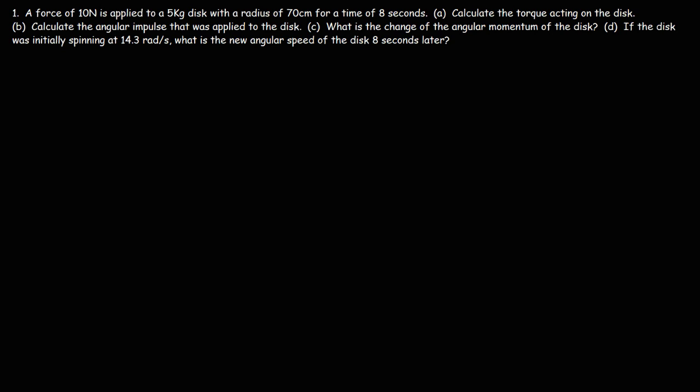In this video, we're going to work on a problem associated with angular impulse. We have a force of 10 newtons applied to a 5 kilogram disc with a radius of 70 centimeters for a time of 8 seconds. Let's begin by drawing a picture. I'm going to draw the top view of the disc, which looks like a circle. Here we have the radius of the circle, and we're going to apply a force here.